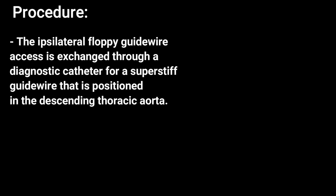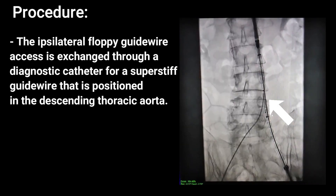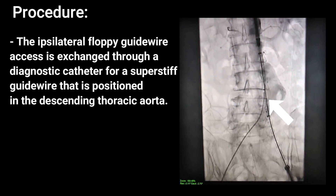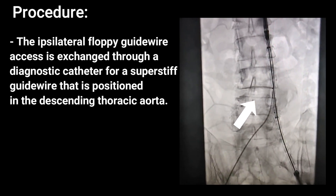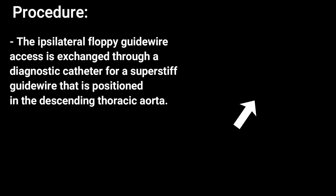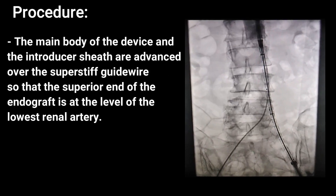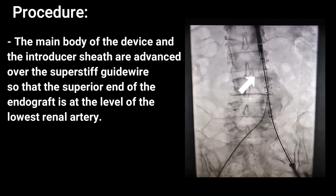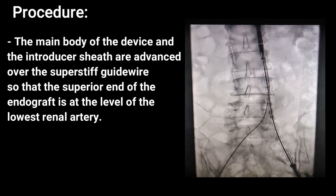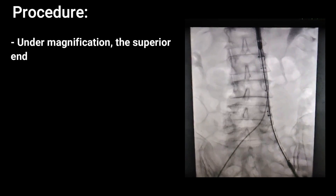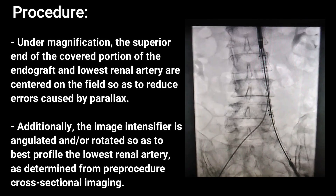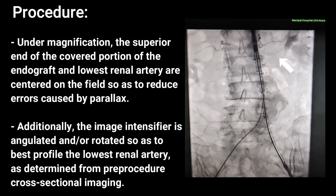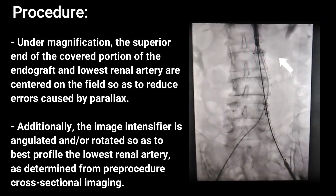After taking measurements, the ipsilateral floppy guide wire access is exchanged through a diagnostic catheter for a super-stiff guide wire, positioned in the descending thoracic aorta. The main body of the device and the introducer sheath are advanced over the super-stiff guide wire so that the superior end of the endograft is at the level of the lowest renal artery. Under magnification, the superior end of the covered portion of the endograft and the lowest renal artery are centered on the field to reduce errors caused by parallax.